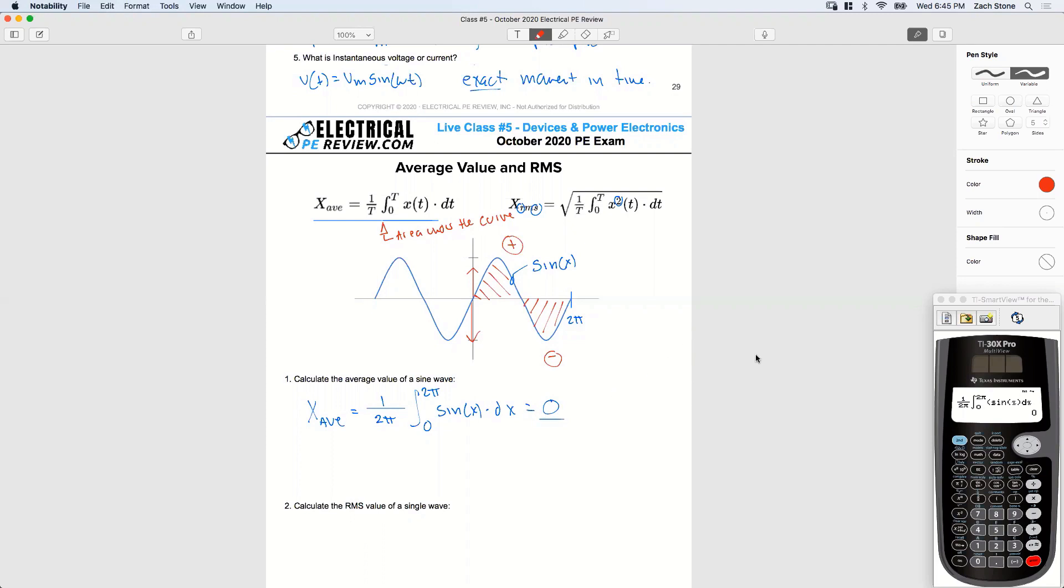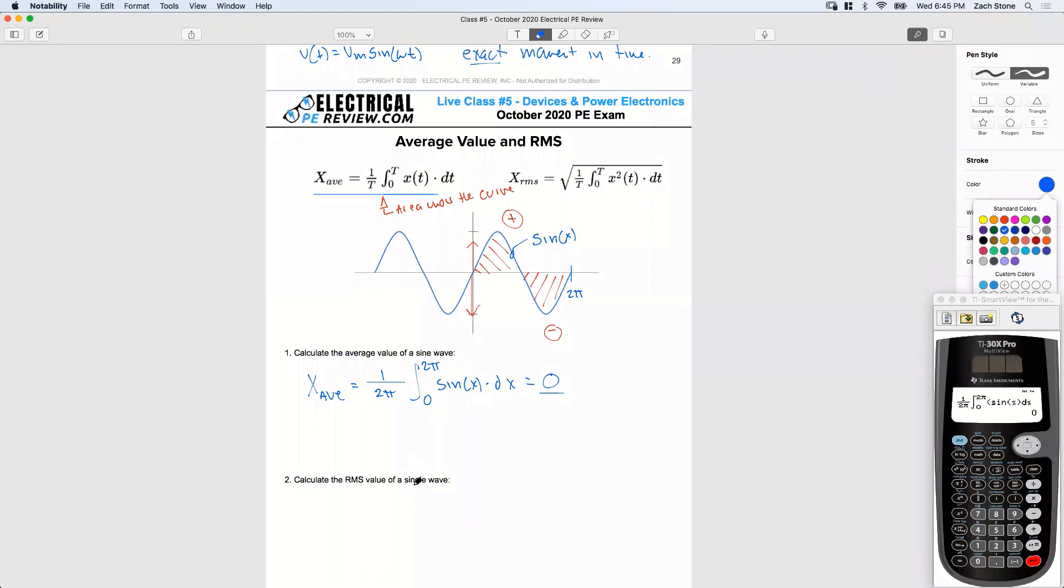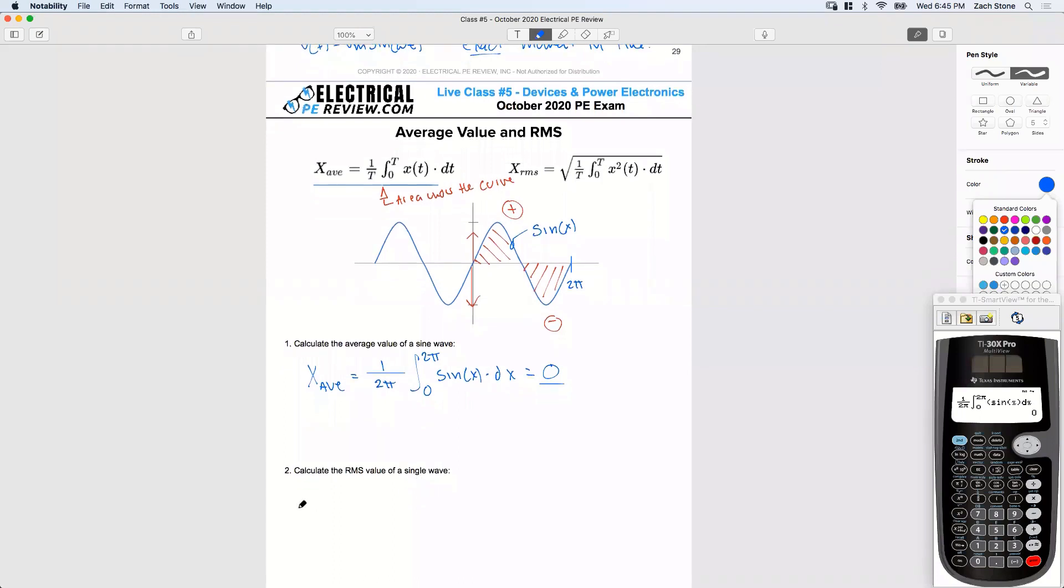All right, how about let's try to calculate the RMS value of this same sine wave. So I'm going to use this formula here up top on the right. We're going to see what we get. So now I've got X-RMS equals...